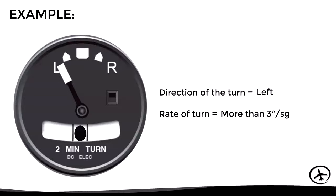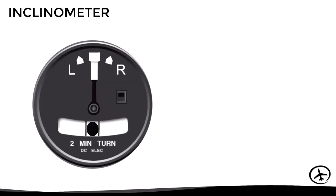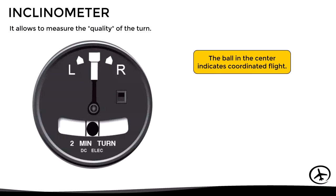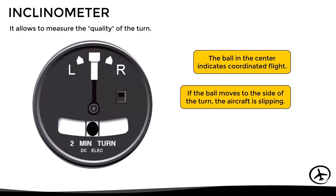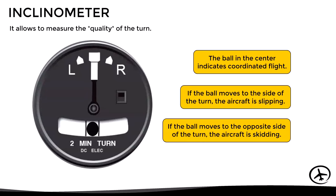Now let's see how to read the inclinometer. In general terms, it measures the quality of the turn. It consists of a capsule filled with liquid and a ball free to move inside. If the ball remains centered, it indicates coordinated flight. If the ball moves to the side of the turn, it indicates a slipping turn. If the ball moves to the opposite side of the turn, it indicates a skidding turn.